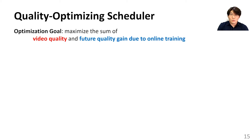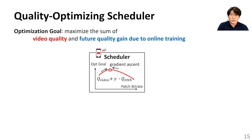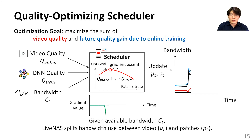The goal of the quality-optimizing scheduler is to locate the bandwidth split between the video and training patches that results in maximum video quality. Since we observed that the optimization goal is a concave function, our quality-optimizing scheduler applies gradient ascent to find the patch bitrate that leads to maximum video quality. The scheduler then updates the target bitrate of patch and video respectively.